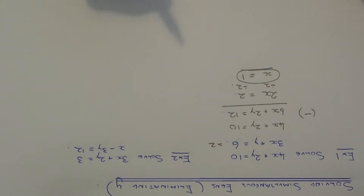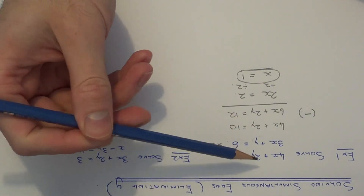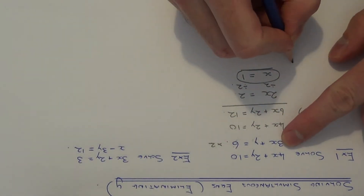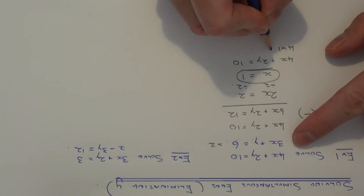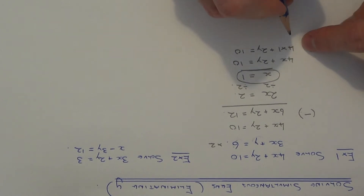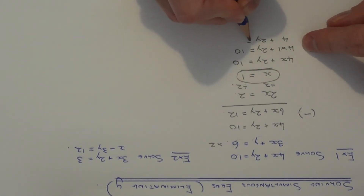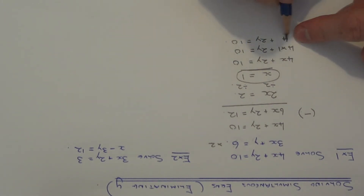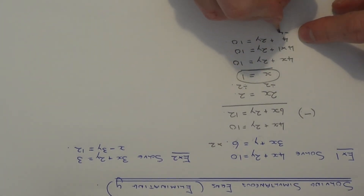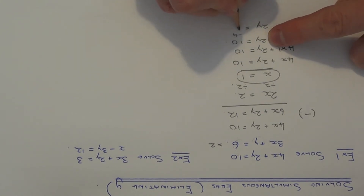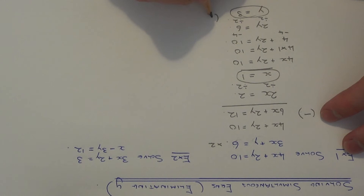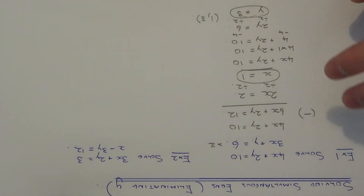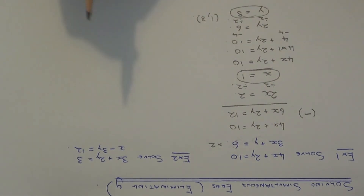Once we've found the value of x, we can substitute this back into one of the first two equations to work out the value of y. Let's go with the first equation. Solving this simple equation, let's get rid of the 4 by taking 4 from both sides, which gives 2y equals 6. Then divide both sides by 2 to give y equals 3. So our solution is (1, 3) — this is where the two straight lines cross on the coordinate grid, hence written as a coordinate.